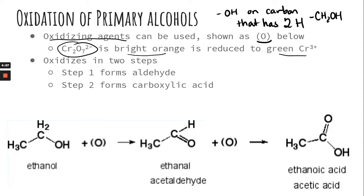For primary alcohols, there are actually two steps to oxidation. In the first step, the primary alcohol forms an aldehyde, which has a double-bonded oxygen on the end. In the second step, you form a carboxylic acid, which has both the double-bonded oxygen and a hydroxyl group. So you go from alcohol to aldehyde to carboxylic acid.